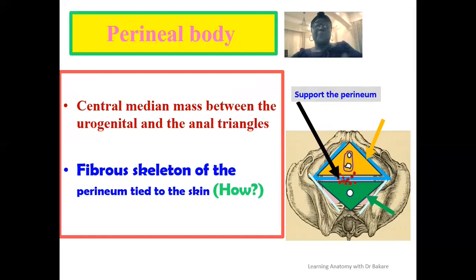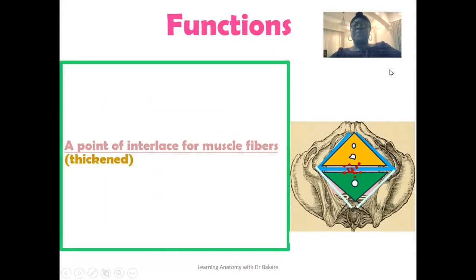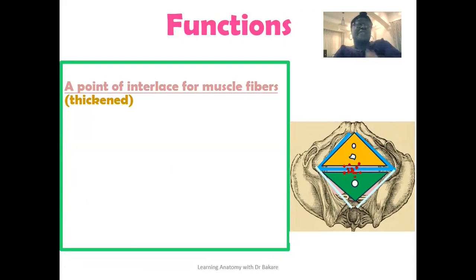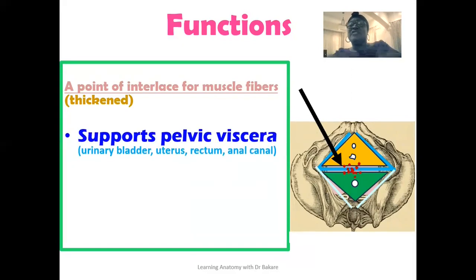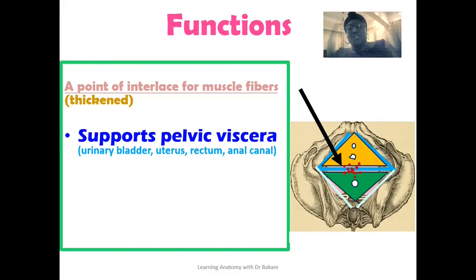The perineal body is a point where fibers from different muscles around the perineum interlace and converge. This region is thickened because it is a collection site of different muscle fibers. Apart from creating a skeletal framework, it also provides support for the pelvic viscera — structures within the true pelvis including the urinary bladder, rectum, anal canal, and specifically in females, the uterus.